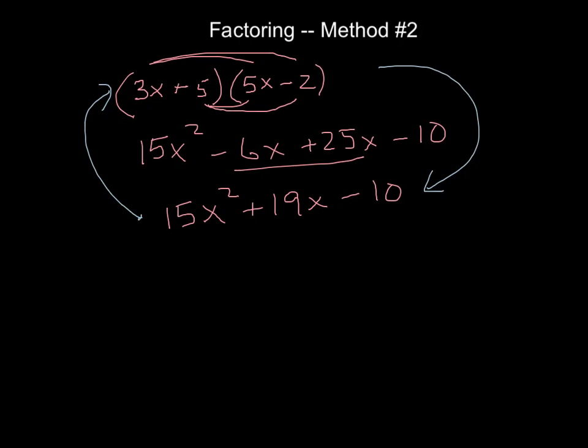So notice when we went and multiplied, we ended up with a 15x² term. Where did that 15x² come from? It came from the product of the two x terms, those that you often refer to as firsts. And then if you see the number term, the number term came from the product of the two lasts.